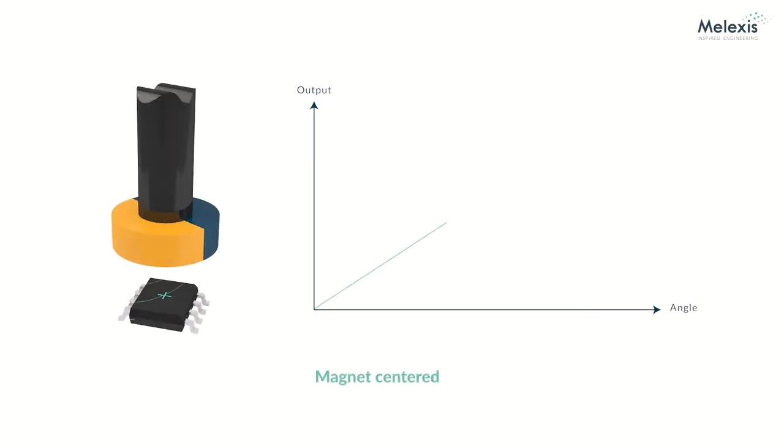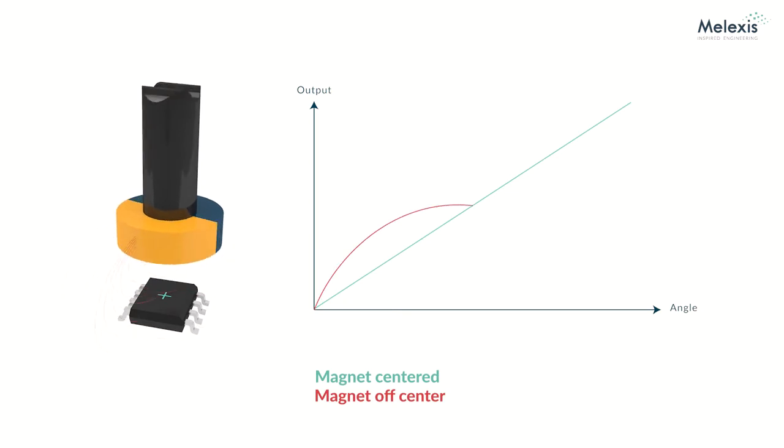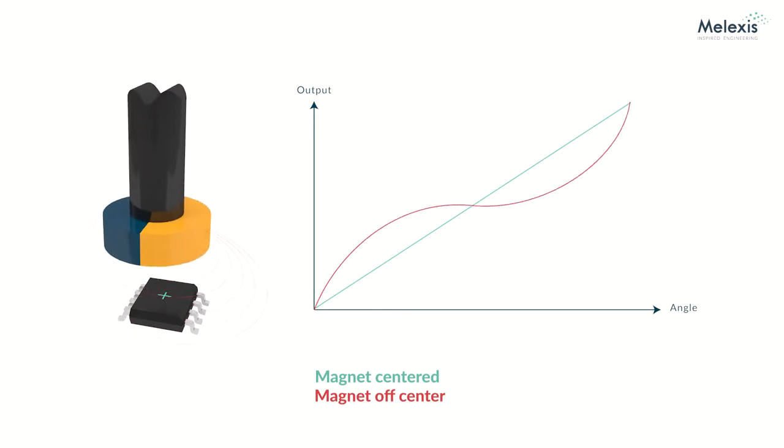We at Melexis guarantee that our sensors can deliver a linear output with the smallest error possible, but mechanical tolerances in the application level, such as the imperfect alignment of magnet and sensor, may introduce a non-linearity to the signal. That's why we offer the back-end calibration, because it allows you to compensate for that non-linearity and achieve the desired linear output.